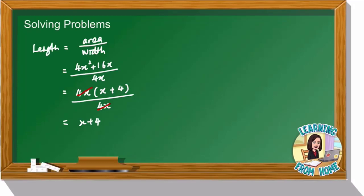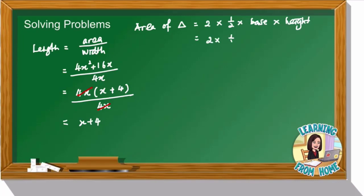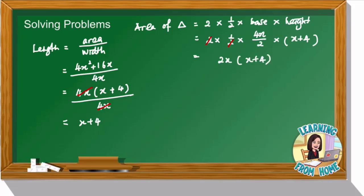After finding the length, we find the area of the two triangles. We use 2 × ½ × base × height. The base from the rectangle is 4x, but since it's half of it, the base is 4x ÷ 2. The height is x + 4. Simplifying: 4x ÷ 2 = 2x, so the expression becomes 2x(x + 4). Expanding using the arrow method gives 2x² + 8x. This is the area of the two triangles.